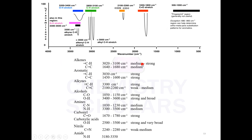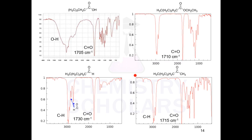Some important IR values are given here. Most of the time we need these values for interpretation of spectra or solving numericals on spectroscopy. Fingerprint region values are not generally useful because it's a complex region, but we can identify certain substitution patterns on a benzene ring — ortho, meta, para. Using these tabulated values, we can find out the structure.